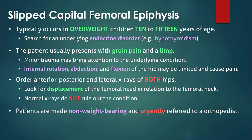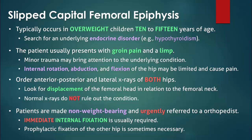In order to prevent further slippage, the child must be made non-weight-bearing and urgently referred to an orthopedist. Immediate internal fixation using a single cannulated screw is the mainstay of treatment. Many patients with only one hip affected eventually develop a condition in the contralateral hip, so those who do not receive prophylactic fixation should be followed closely until they reach their final height.